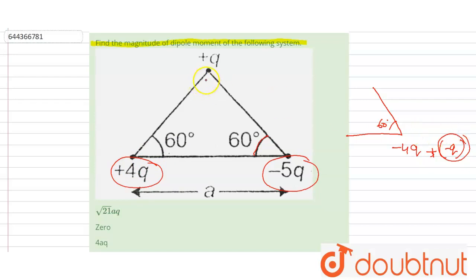So there are two dipoles. Let's suppose this is called p1 and this is called p2.